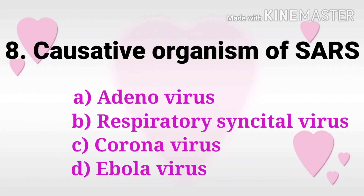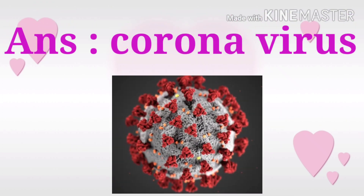Question 8: Causative organism of SARS (severe acute respiratory syndrome)? The options are adenovirus, respiratory syncytial virus, coronavirus, and Ebola virus. The answer is coronavirus. The new epidemic COVID-19 is also caused by coronavirus. The SARS coronavirus was identified in 2003 (SARS-CoV) and affected 26 countries with more than 8,000 cases.